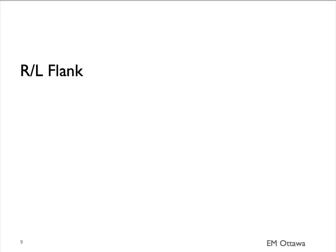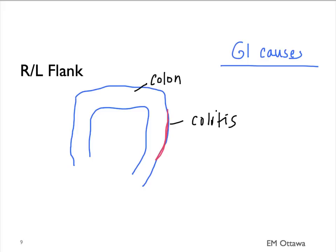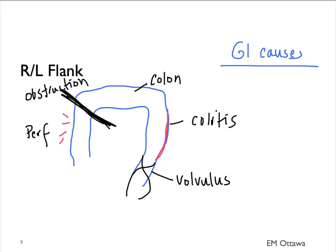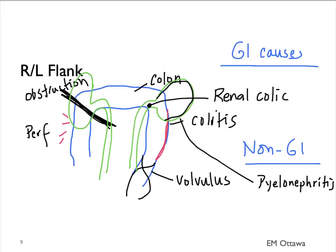We will group right and left flank together. What lives there? The large bowel. GI causes therefore include colitis, perforation, volvulus, or obstruction. For non-GI causes, the kidneys and the ureters live right there. Therefore, kidney stones or infection can give pain in the flank area.